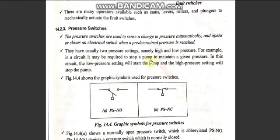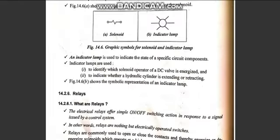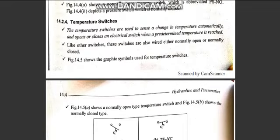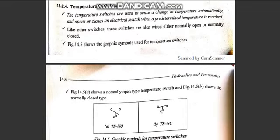In a circuit it may be required to stop a pump to maintain a given pressure, or start a pump for high pressure — this is controlled by the pressure switch settings. Temperature switches similarly sense temperature automatically and electrically, and start to open or close. They also come in normally open and normally closed types.